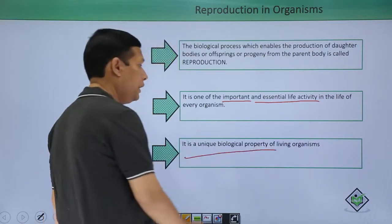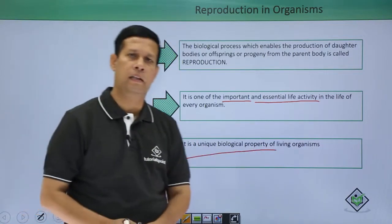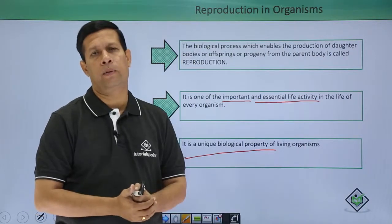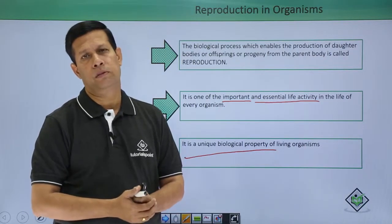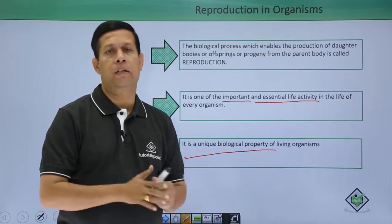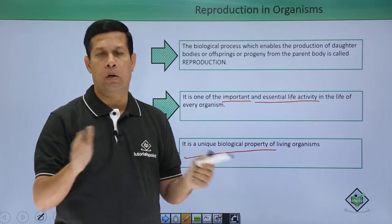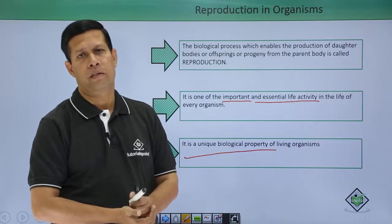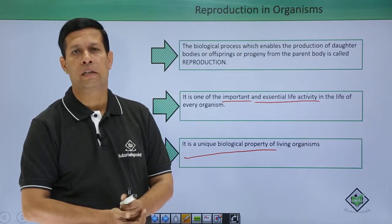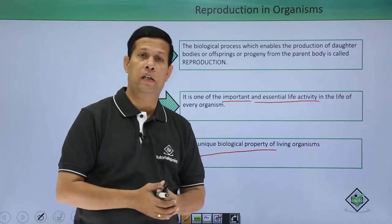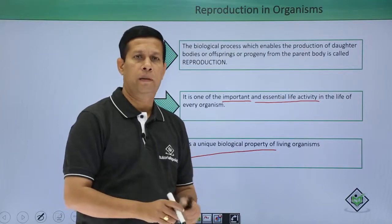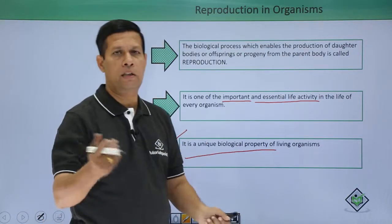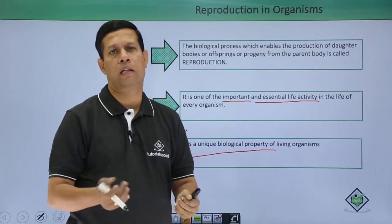One more important general feature is that reproduction is a unique biological property of living organisms. In nature, other than living organisms, no body, no component, and no structure is involved in the formation of a new body. That is why reproduction is taken as a unique biological property of living organisms.